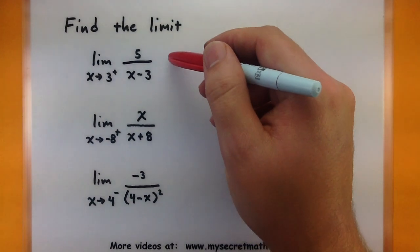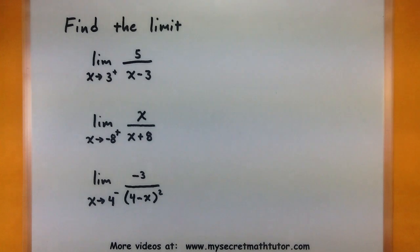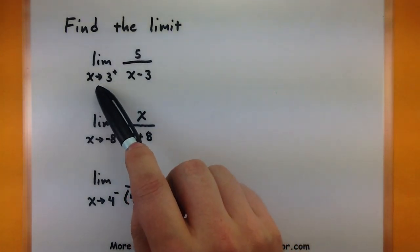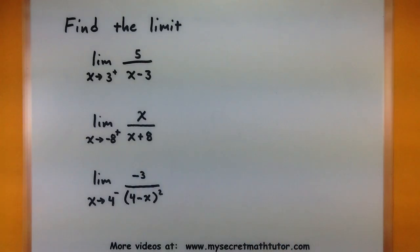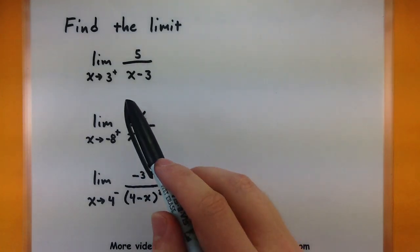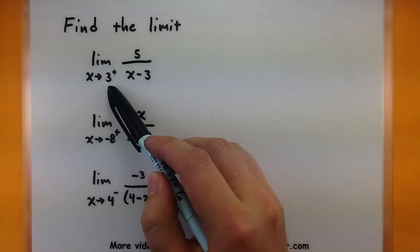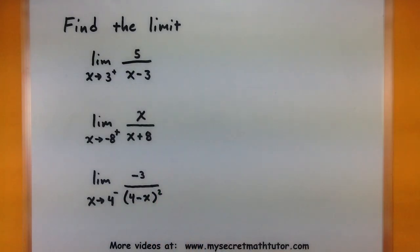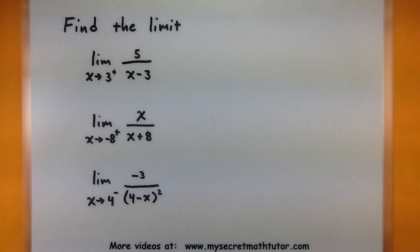Starting with the first example, I'm looking at the limit as x approaches 3 from the right side. If I was to just substitute 3 in directly, I'd get an undefined value on the bottom — I can't divide by 0. So this is my clue that this probably has a limit that goes towards infinity. How can we figure out whether it's positive or negative infinity?